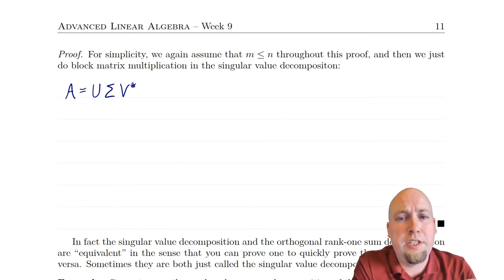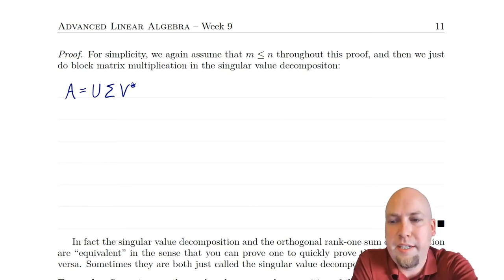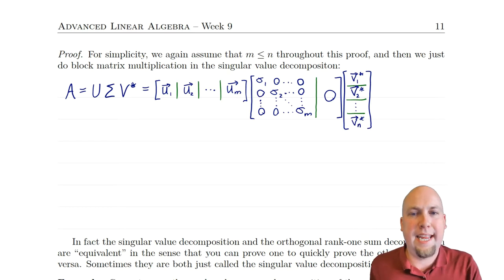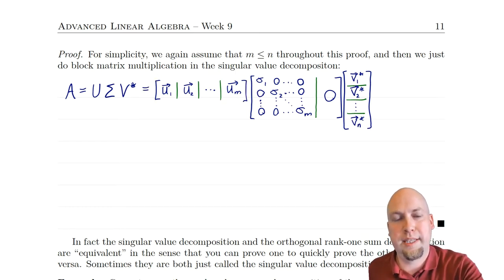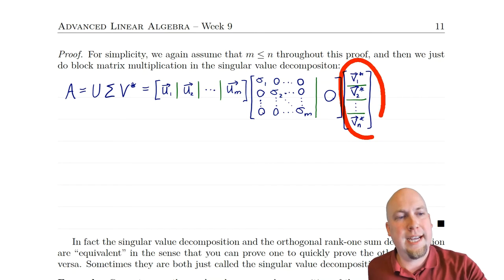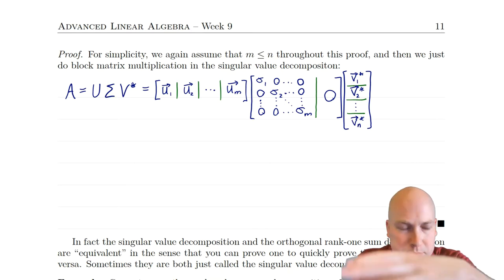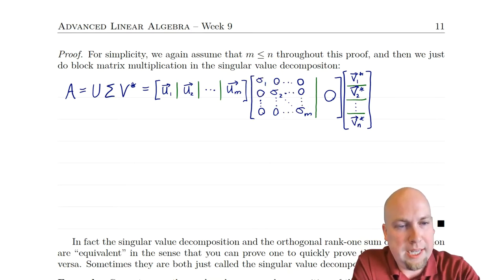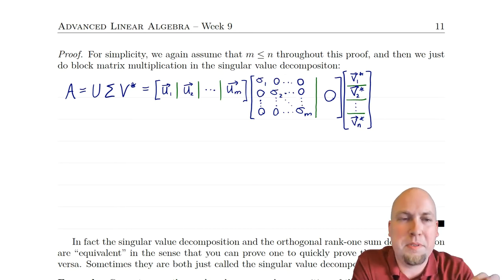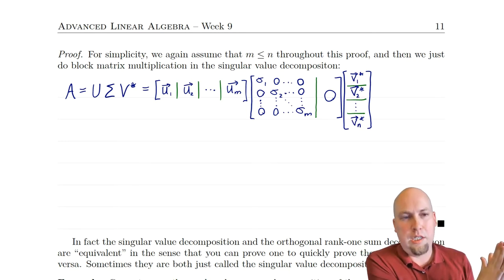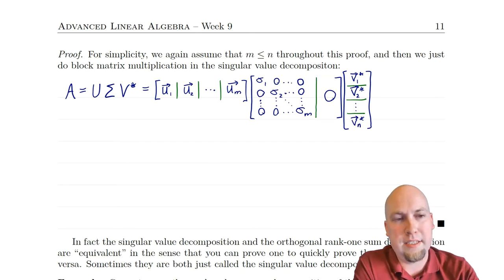To prove it, we just start off with a singular value decomposition: A = UΣV*, where U and V are unitary. We write U down in terms of its columns, V* in terms of its rows, and Σ in terms of all its entries — its diagonal entries are σ₁ up to σ_M, with zeros everywhere else. For the purposes of this proof, I'm assuming that M is less than or equal to N, meaning the matrix has no more rows than columns. If it's the other way around, the proof is essentially the same — you'd just have zeros in a different place.